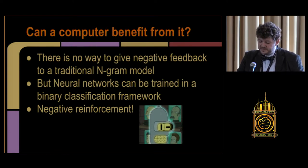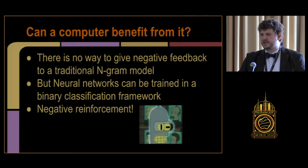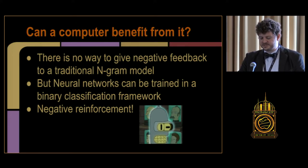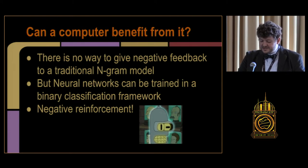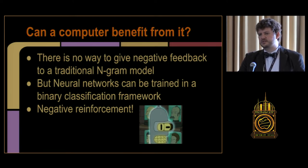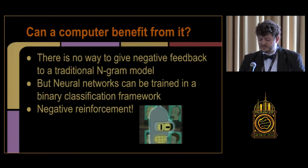There is no way to give negative feedback to traditional n-gram models. Traditional language models count the frequency of n-grams and try to maximize the likelihood of the corpus — you can't tell them this count was good but this one was bad. Neural networks, on the other hand, are being used more and more for language modeling, and they can benefit from positive and negative reinforcement. You can do multi-class classification with neural networks, telling the network this sentence is perfectly okay but this one that looks very similar is not. That is my theory — that we can benefit from ungrammatical data this way.